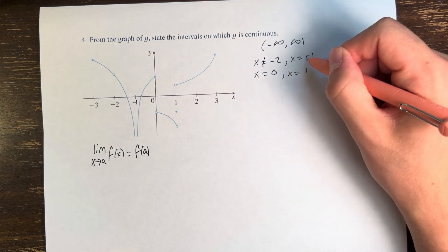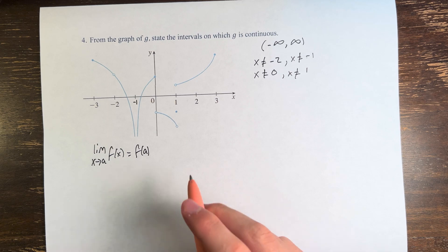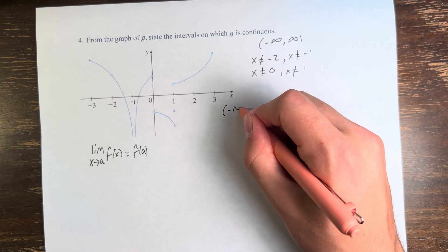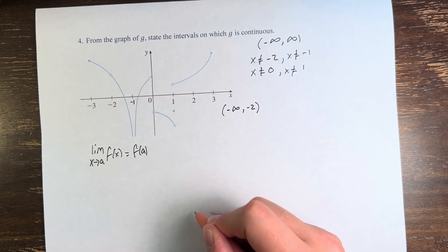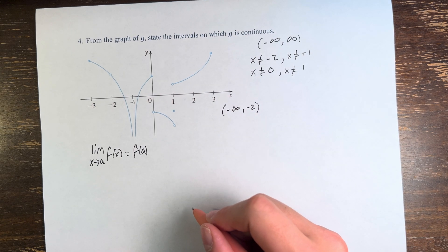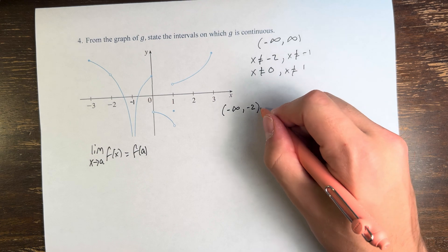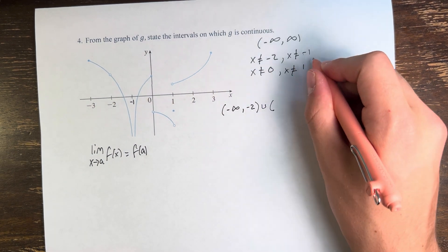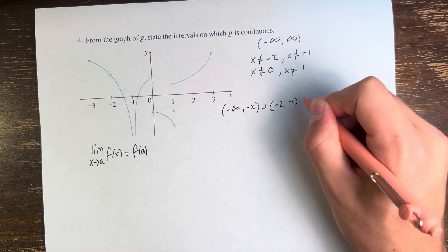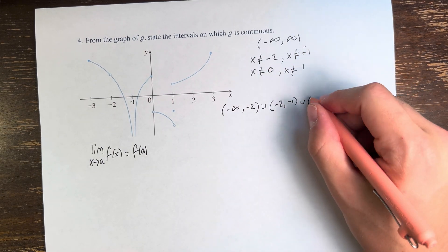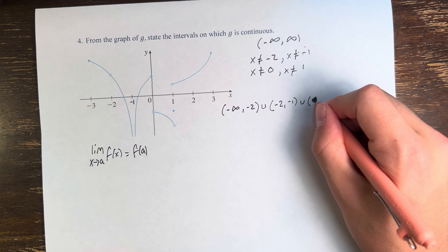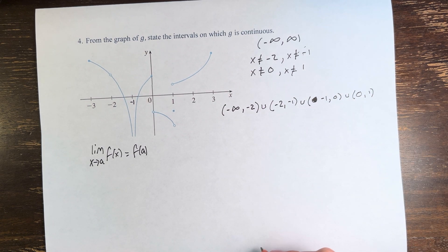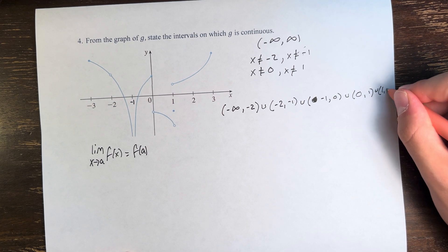But we have x cannot be equal to negative 2, negative 1, 0, or 1. So writing the intervals on which g is continuous, we start from negative infinity, we go up to negative 2. Parentheses, to denote that it's an open interval. This interval does not include negative 2. Then from negative 2 to negative 1. Then from negative 1 to 0. And then from 0 to 1. And finally, from 1 to infinity.